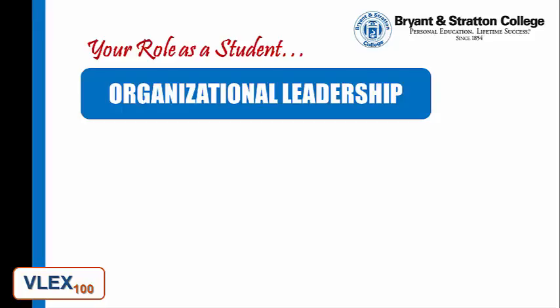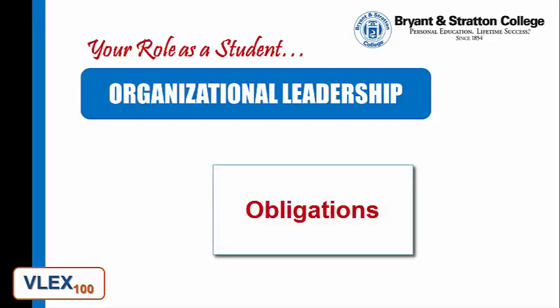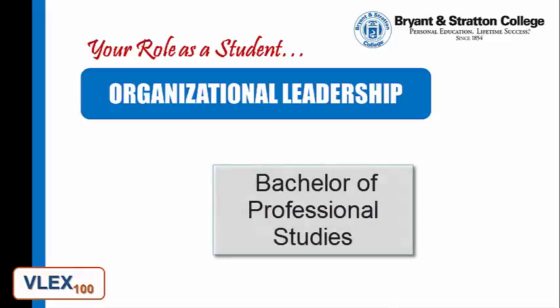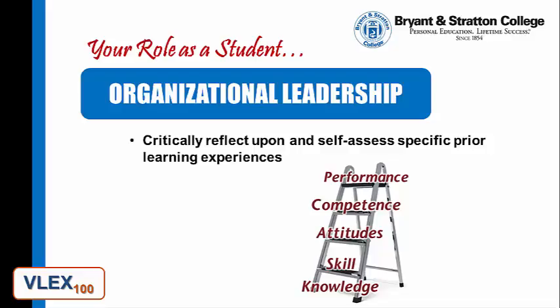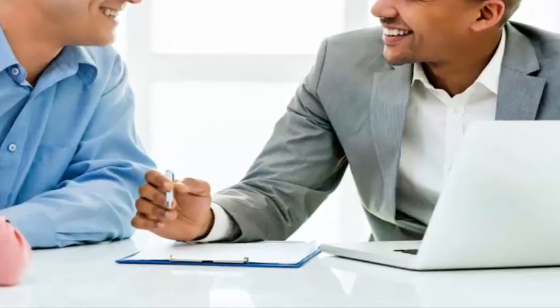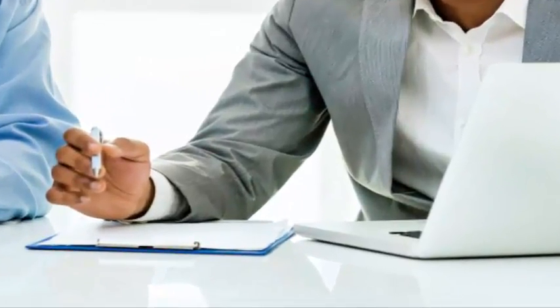As an organizational leadership student, you have a responsibility to fulfill the following obligations to complete the Bachelor of Professional Studies. Critically reflect upon and self-assess specific prior learning experiences that may be college credit worthy. With your mentor's guidance, you will work together to identify potential areas of prior learning that may be college credit worthy. During this process, you will align this learning to a college-level course and either compile within a learning portfolio or attempt a proficiency exam to obtain credit for your prior learning.